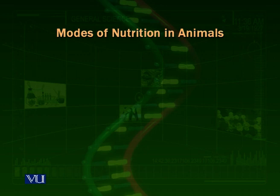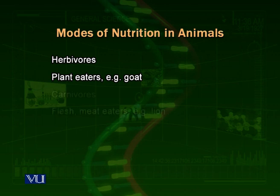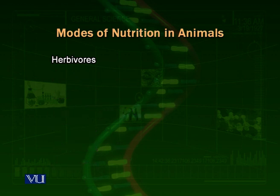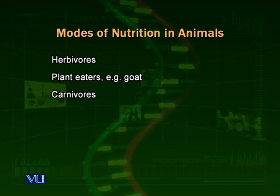Now we talk about the various modes of nutrition in animals. There are four major categories of animals according to their modes of nutrition: herbivores, carnivores, omnivores, and detritivores. Herbivores are those organisms which eat plants — for example, goats eat the leaves of different plants, buffalos eat grass, and cows also eat grass and plants. Herbivores acquire their energy and food from plants.